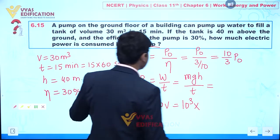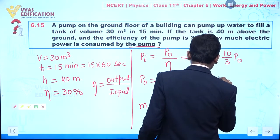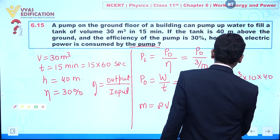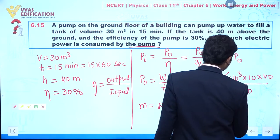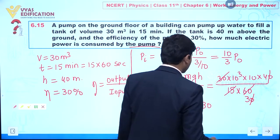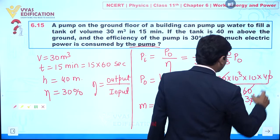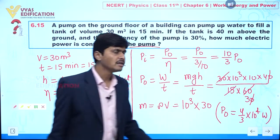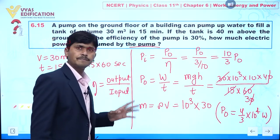Volume is given as 30 meter cube. So mass = 30 × 10³ kg. Substituting: output power = (30 × 10³ × 10 × 40) divided by (15 × 60). After cancellation, output power = (4/3) × 10⁴ watt.